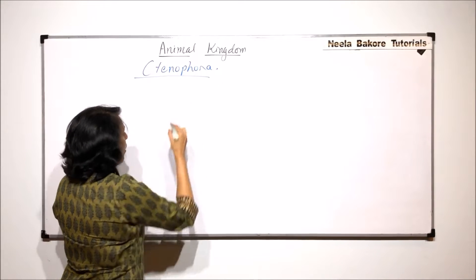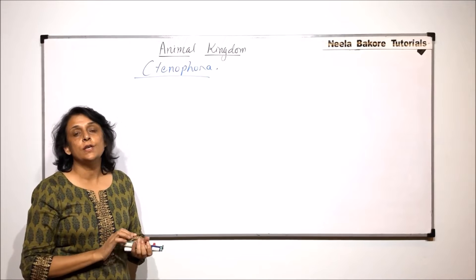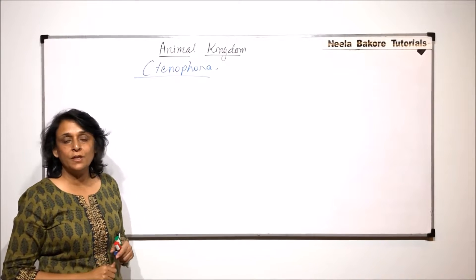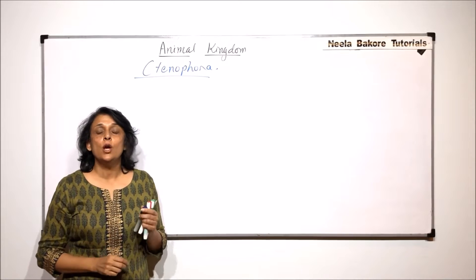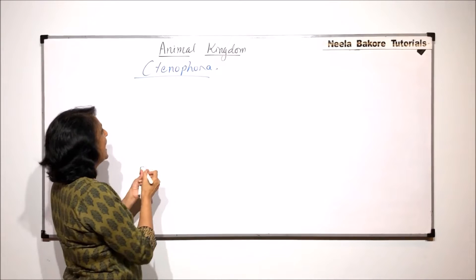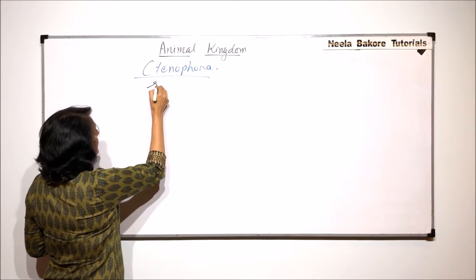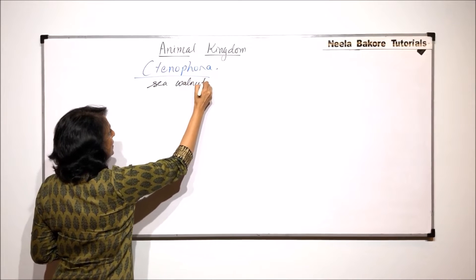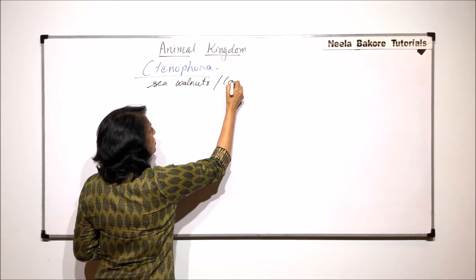The meaning of these two words, cteni and phora, are taken from the Greek language and they mean comb bearing.